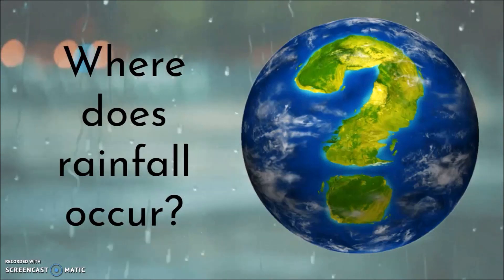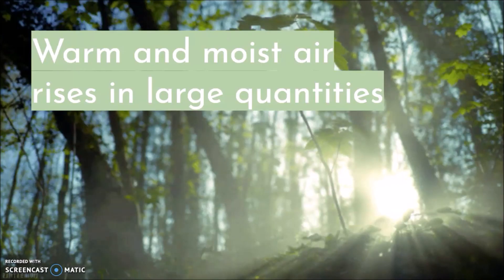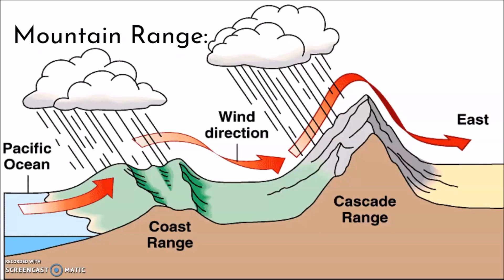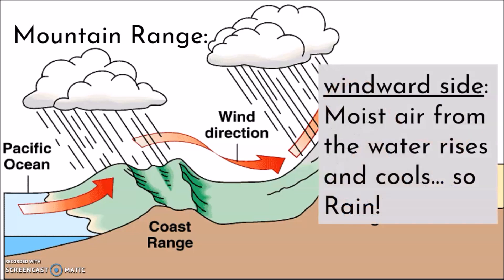Where in the world does rainfall occur? The simple answer is anywhere where there is warm and moist air rising in large amounts. Let's take a look at a mountain range, which will show this very clearly. As the air rises on the left side of the screen by the Pacific Ocean and condenses into clouds, the wind will carry it towards the right side, towards the east. This is called the windward side — the side where the wind hits first — and since it's filled with moist air, eventually it's going to rain.